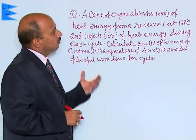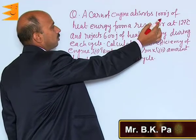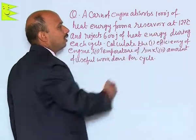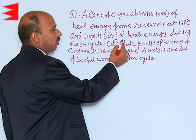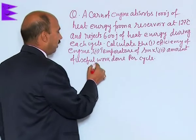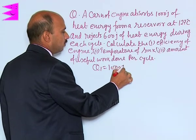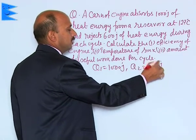Now see the next example, which is based on the Carnot engine. A Carnot engine absorbs 1000 joules of heat energy from a reservoir at 127 degree Celsius and rejects 600 joules of heat energy during each cycle. So you are given Q1 equals 1000 joule and Q2 equals 600 joule.